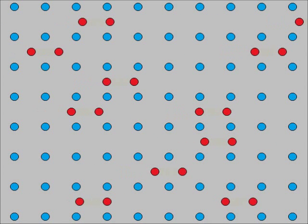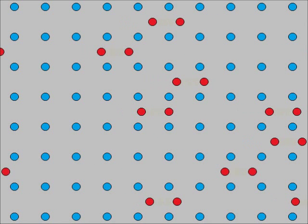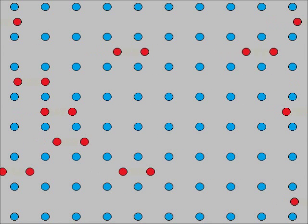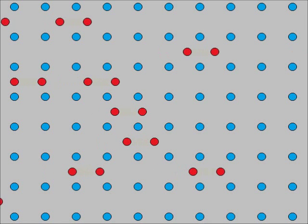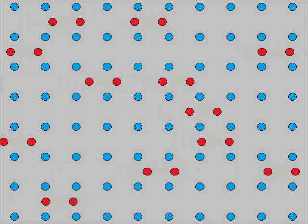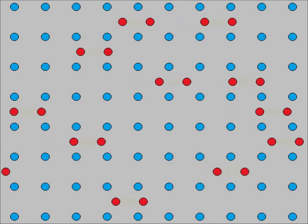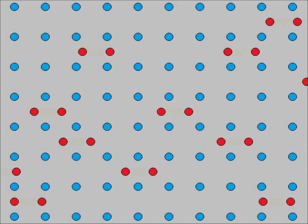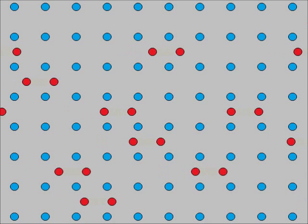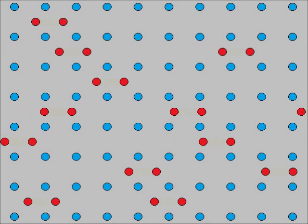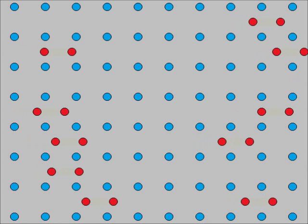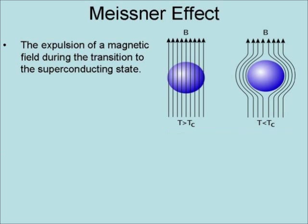Called Cooper pairs, the coupled electrons effectively become a single boson condensed into the ground state. The result is that each coupled electron helps the other overcome any resistance encountered from the lattice.